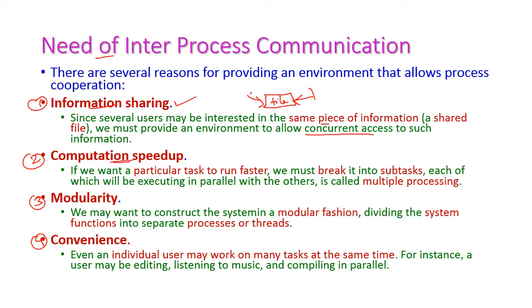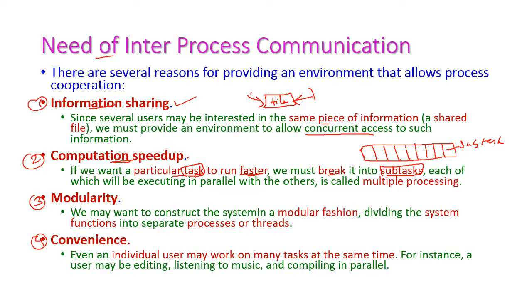The second reason is computation speed up. If there is a big task that should be executed faster, the task should be divided into subtasks. All those subtasks should execute in parallel, and this is called a multiprocessing system. By this way we can increase the speed of computation.